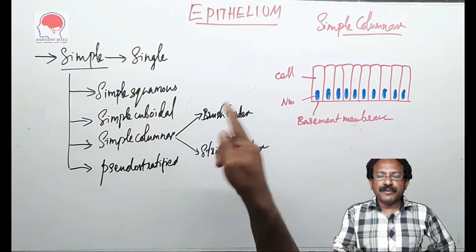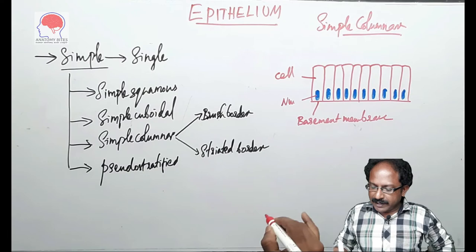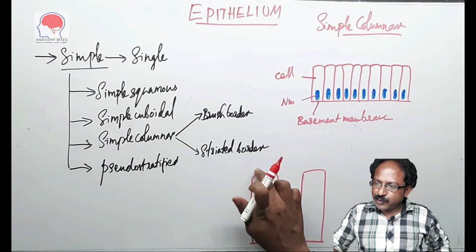I told there are few modifications of the columnar epithelium named brush border and striated border. This brush border and striated border are two surface modifications of the epithelium. Here is the difference of the brush border and striated border. I am drawing two columnar cells to show you the difference. In the first one, the brush border.